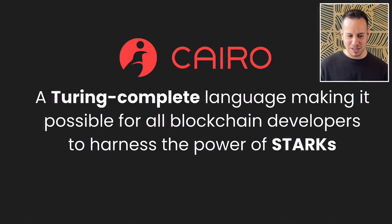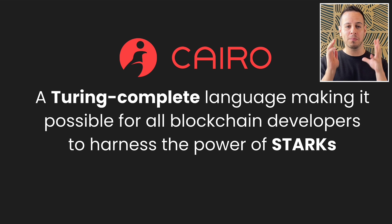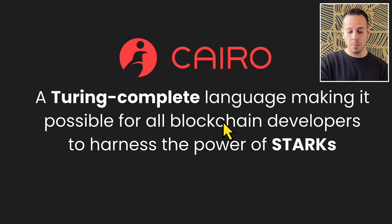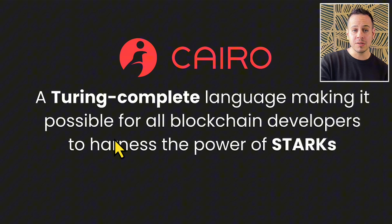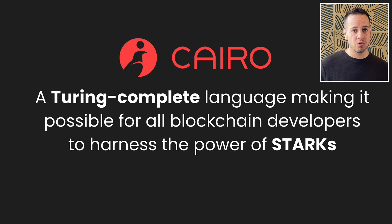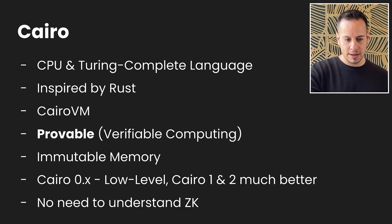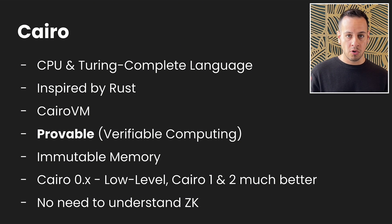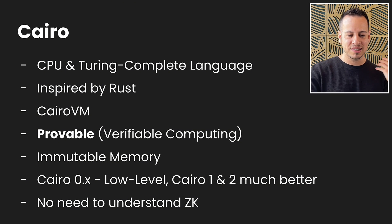What is Cairo? The definition of Cairo from the StarkNet website: Cairo is a Turing-complete language, making it possible for all blockchain developers to harness the power of Starks. So you already know what zero-knowledge proofs, zero-knowledge roll-ups, and Starks are. Cairo allows us to write provable programs and provable smart contracts using Starks.